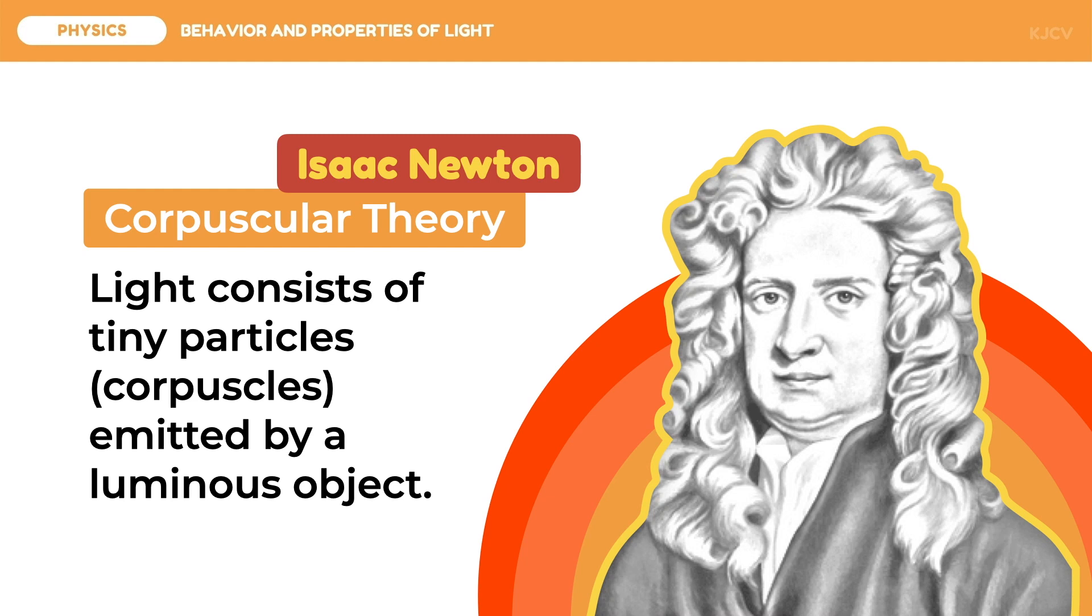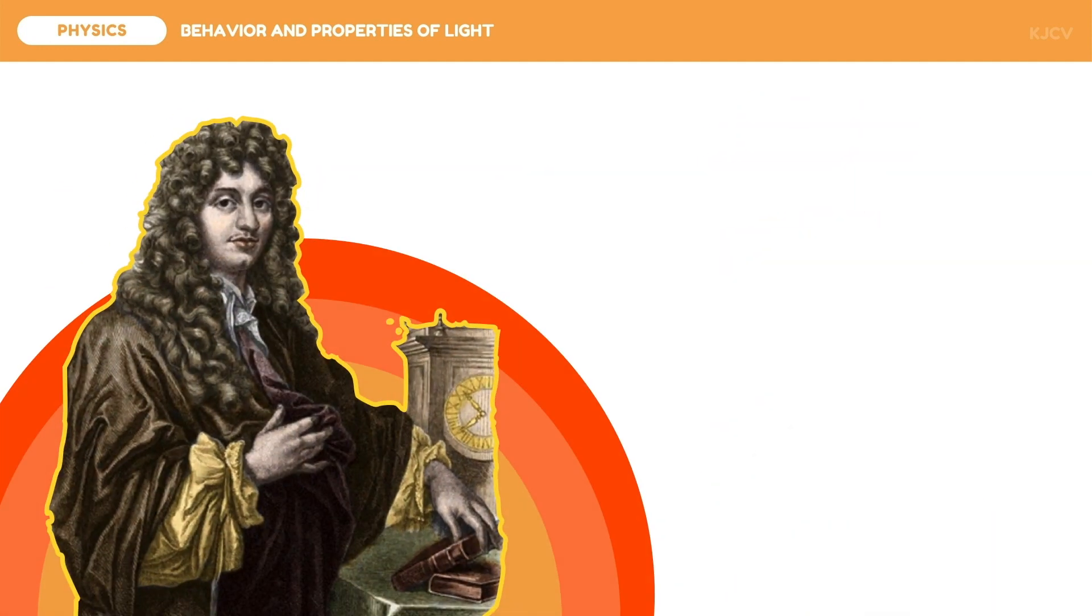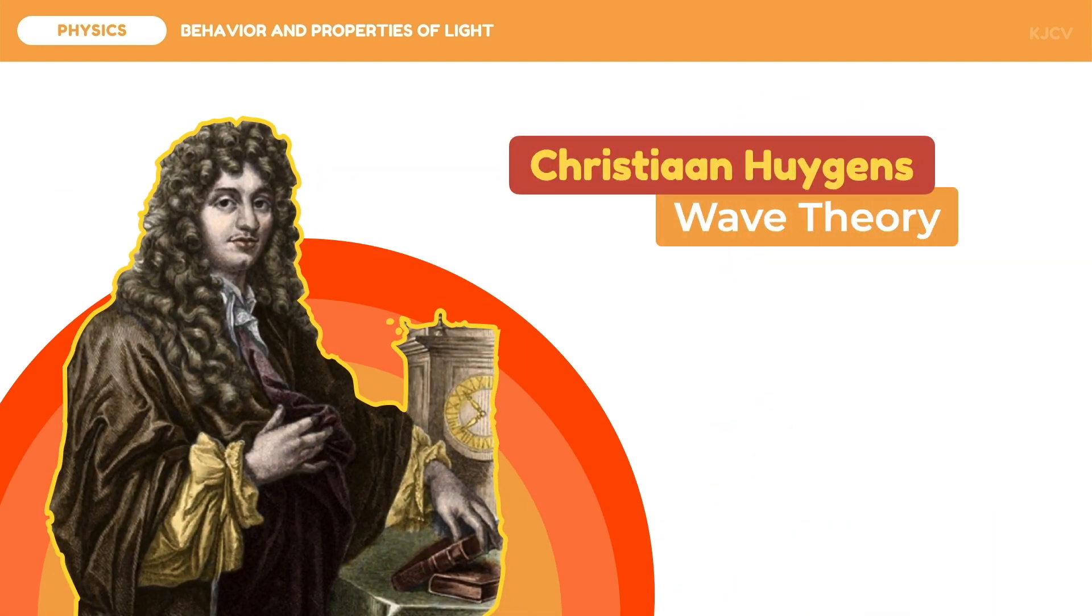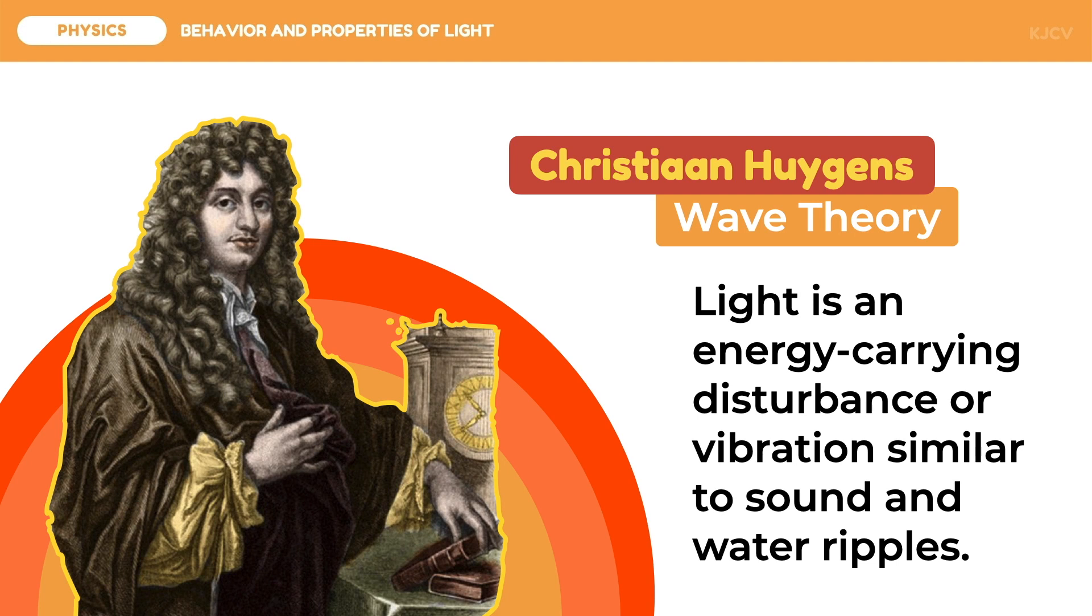However, another perspective on light contradicts this theory. According to Christian Huygens, light is transmitted as waves from luminous bodies to the eye and other objects by an undulatory movement. This is the rise of the wave theory of light. To compare the two theories and light, let us look at how light reflects and refracts as a particle and a wave.